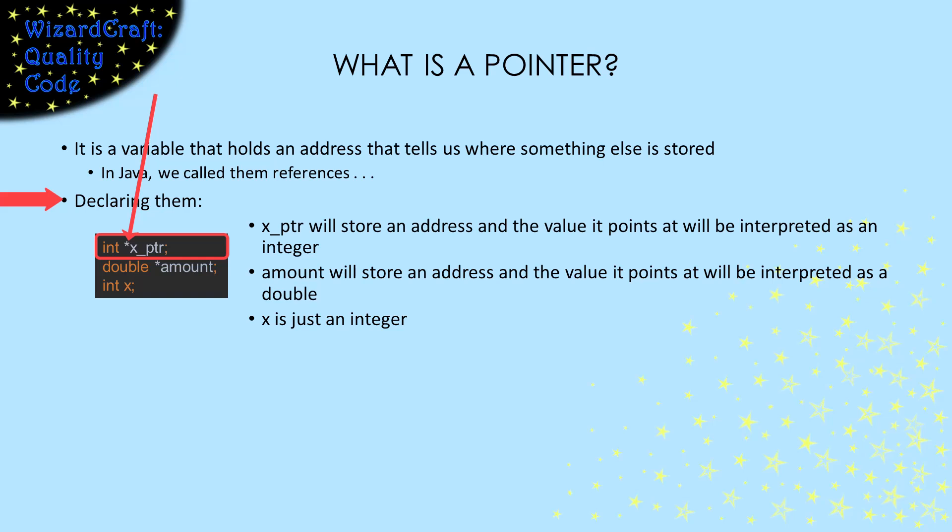The asterisk is what makes it a pointer. We don't have to name them specially. This declares a pointer named amount, and what it points at is a double. Again, the asterisk is what makes it a pointer. If we declare an int without the asterisk, it'll just hold the integer.